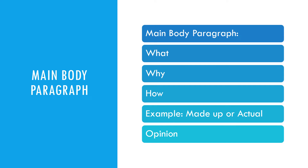In 'what,' write the topic sentence related to the idea presented in your introduction. In 'why,' expand by answering why your idea is valid. In 'how,' explain how it is related to your main idea. The example should be relevant, and include an opinion if required. This approach was really helpful for me to achieve band 7.5 in writing and caused a dramatic improvement from band 6.